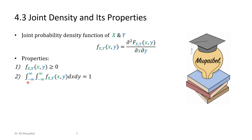The second property: the volume under the two-dimensional joint density function is going to give you one. We used to say the area under the PDF equals one. If you have two random variables — a second-order joint random variable — then it will be the volume. If we have three random variables, then we have three integrations, four will have four integrations, and so on. The integration over all possible random variables should equal one. This is a requirement, a condition.